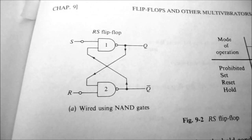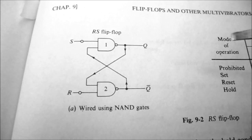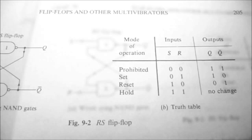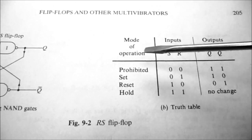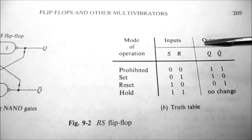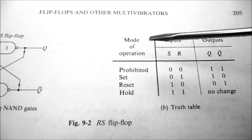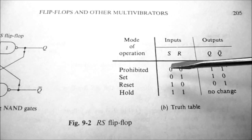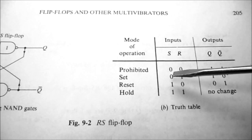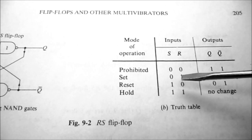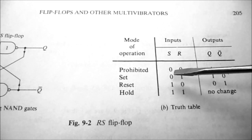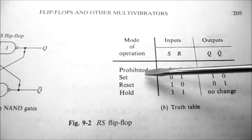Figure 9-2 shows the RS flip-flop using NAND gates, and that's the circuit we're going to wire up. Figure 9-2 also gives us the truth table for the RS flip-flop. Zero is active and one is inactive for set and reset. If you try to set and reset at the same time, that's not a normal condition — they call it a prohibited operation.